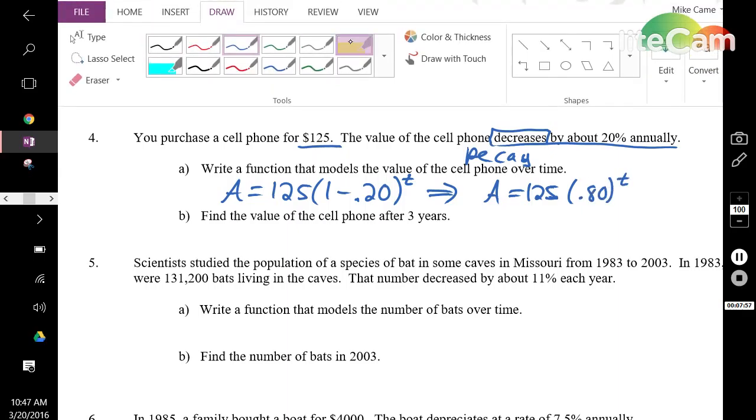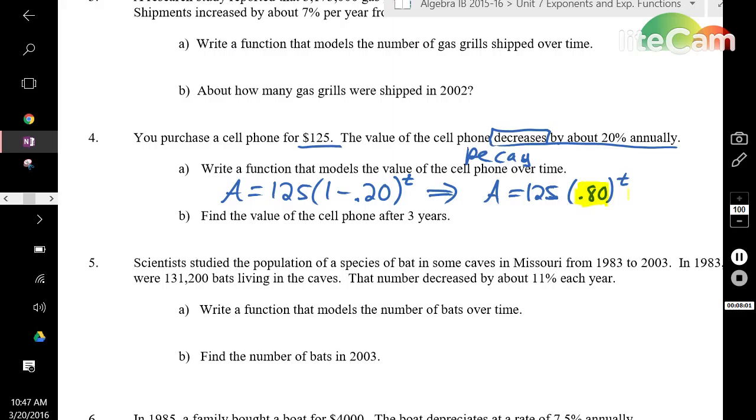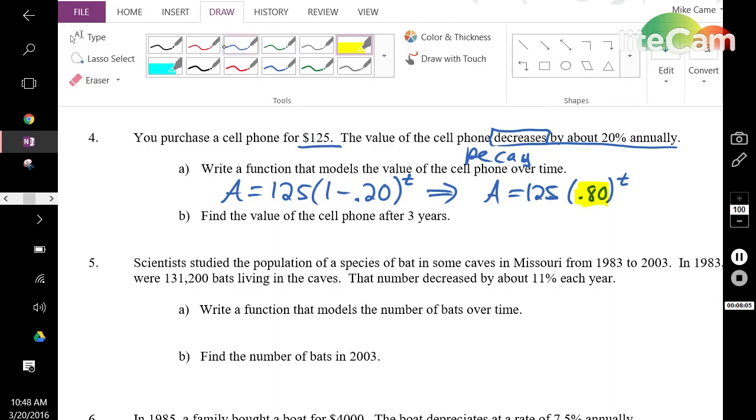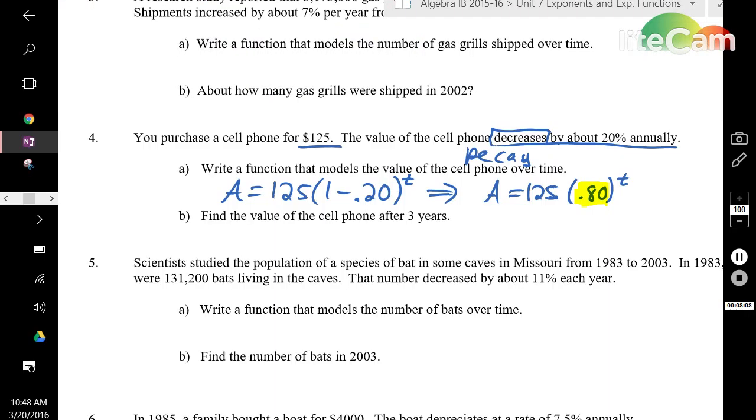Now look at your b value: 0.80. Compare that with 1. It is less than 1, which makes it a decay function, which is what we called for in the very beginning, which matches up, so therefore it makes sense. Part b: find the value of the cell phone after 3 years. 3 years is your given time value. It's going to be A equals 125 times 0.80 to the power of 3. When you calculate that, it's going to be $64. That makes sense because $64 is less than the original value, and we have decay, so therefore it makes sense that the number went down.